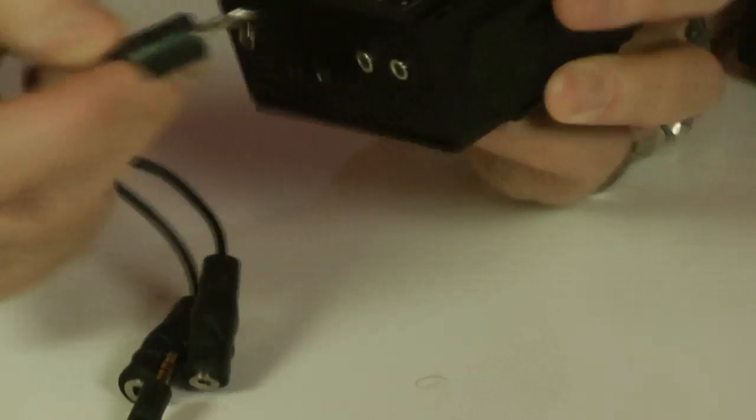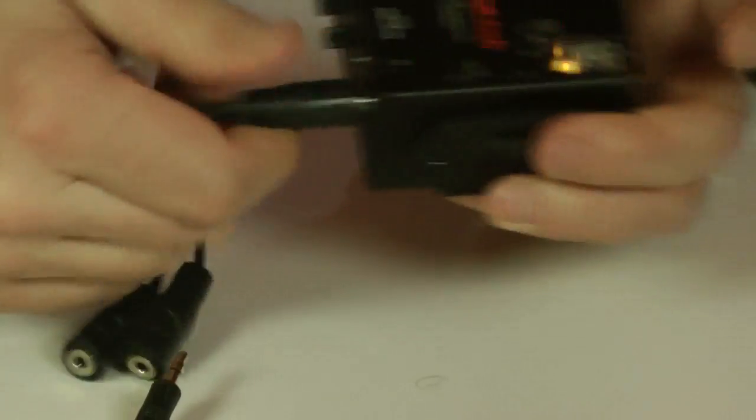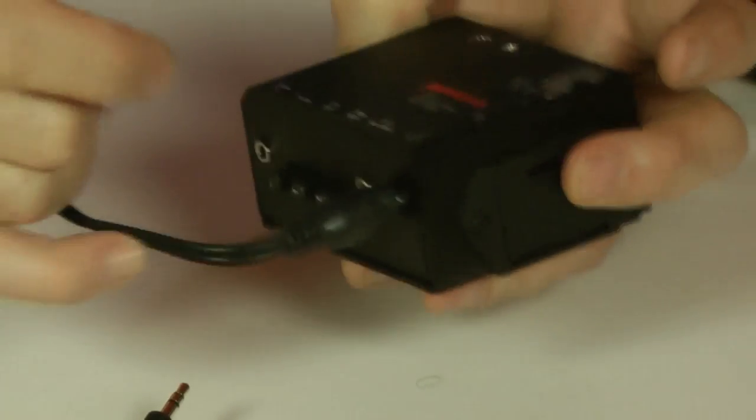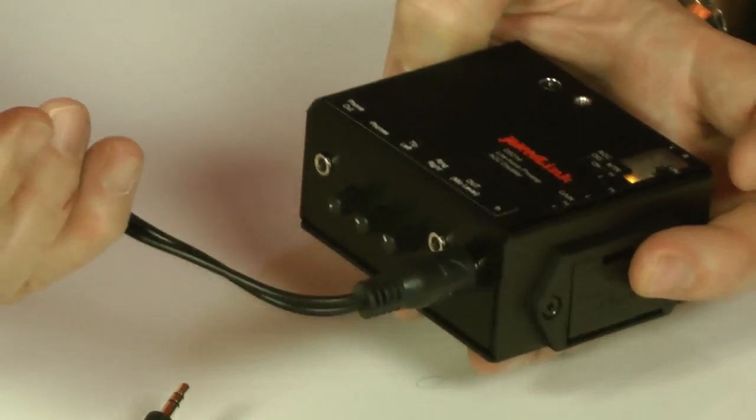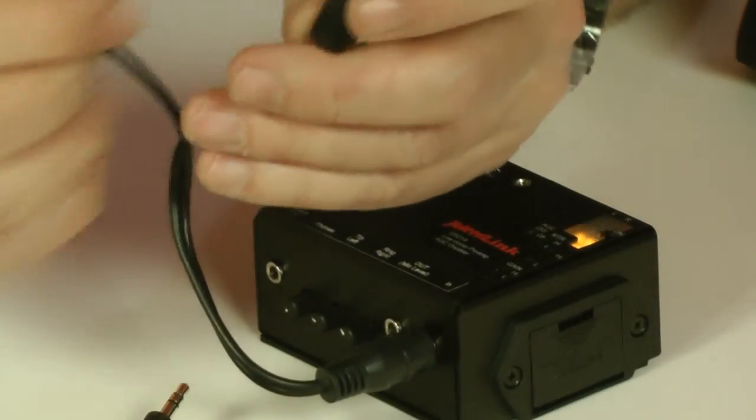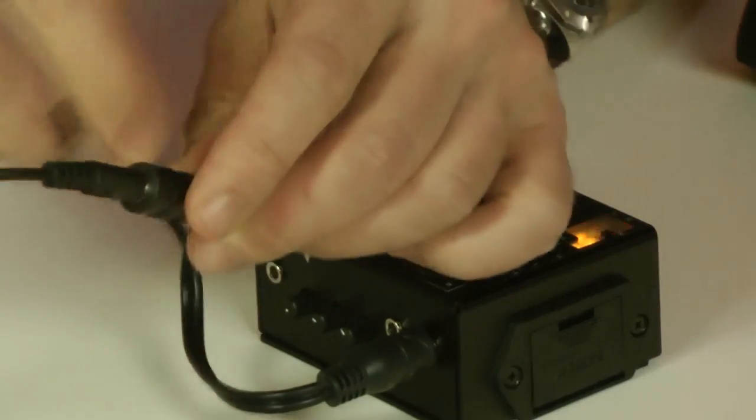So, using a splitter into the socket there, all it is is a mini jack socket basically, and it has two separate cables for left and right, and you're going to use the left channel for one microphone and the right channel for the other microphone. I think the Rode is a mono microphone anyway.